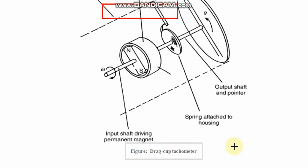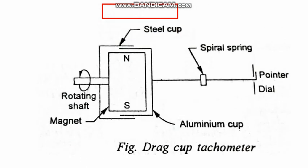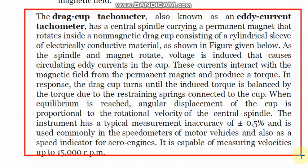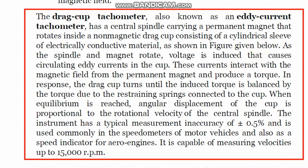This is the drag cup tachometer housing in which the input shaft drives the permanent magnet. Let us now understand the theory of this eddy cup tachometer. It has a central spindle carrying a permanent magnet, which rotates inside a non-magnetic drag cup consisting of a cylindrical sleeve of electrically conductive material — as shown in the figure, it is made up of aluminium.